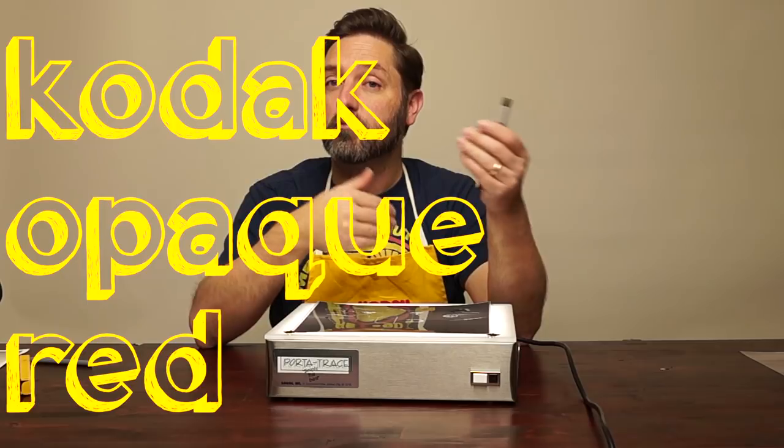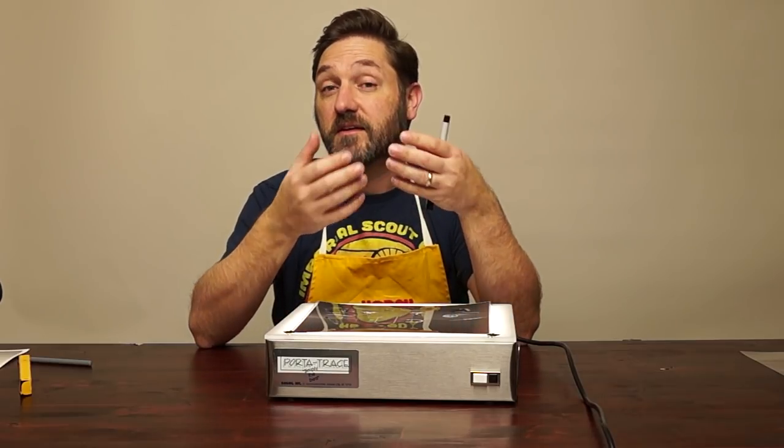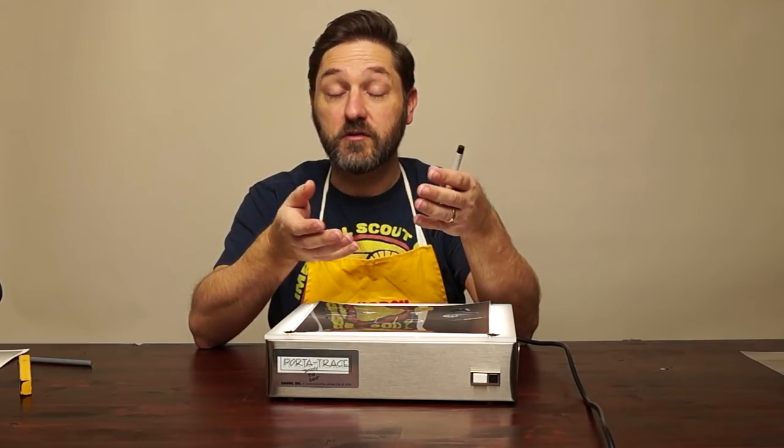Then there's opaque red. Same premise. It's red, it's a thick paste, you apply it with a spotting brush, just like a dye. And what this basically does is just gives you a red mask on the negative that you can see a little bit easier. They both wash off if you mess up.